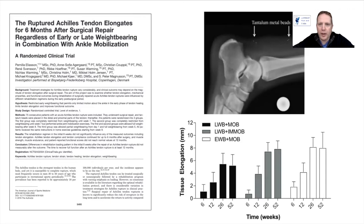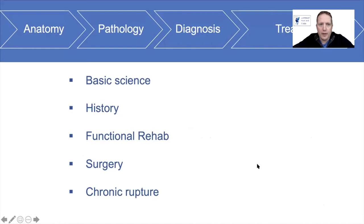Something else to note: a randomized controlled trial placed tantalum beads at surgery and followed patients with radiographs over a year to look for elongation. At six months, they did observe elongation of the tendons. So if you are repairing, don't expect it to stay in that position — you will get approximately five millimetres of elongation per tendon.